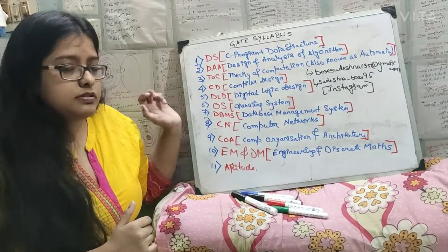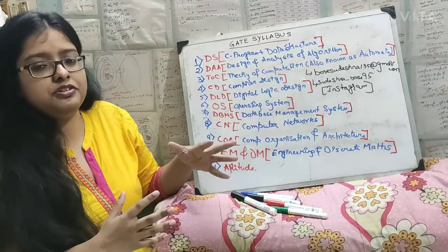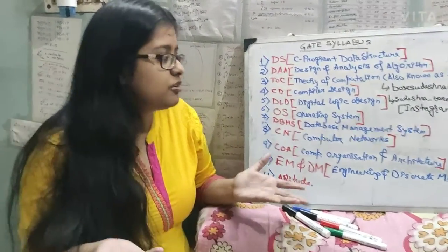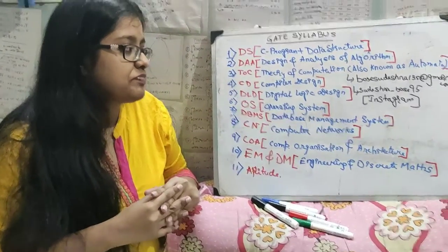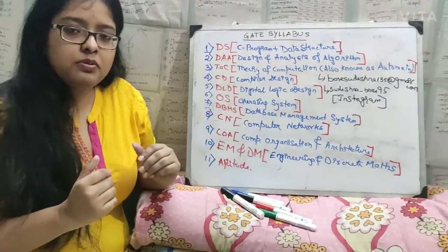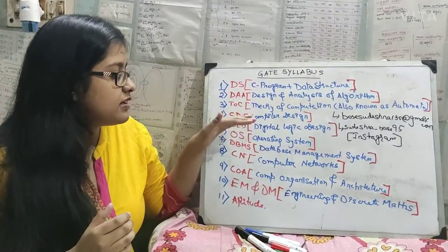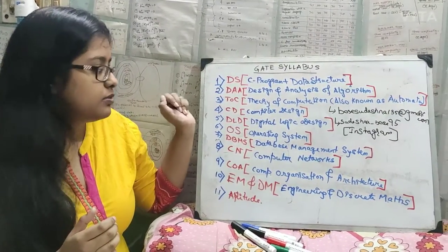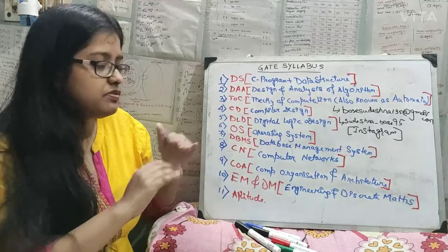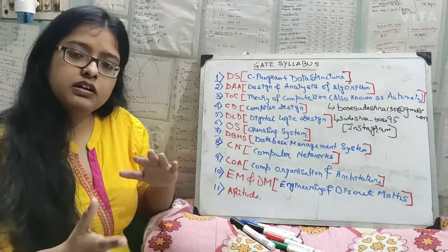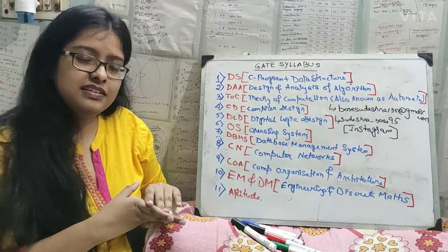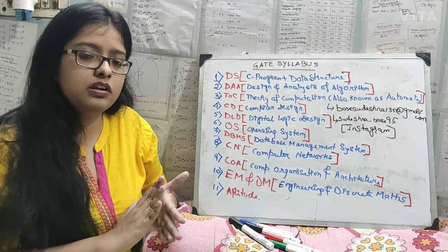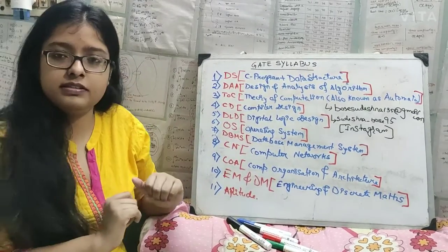Next is TOC — Theory of Computation, or as we all know it, Automata. It's commonly known to all and it's also important. Next is Compiler Design, which is related to TOC — once you finish TOC, you continue with CD. Compiler Design is a very easy subject literally, and it is smaller compared to all other subjects, so it will be easier compared to others.